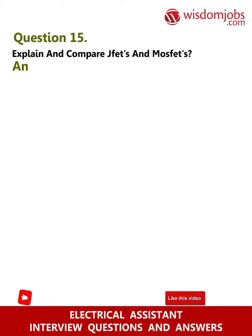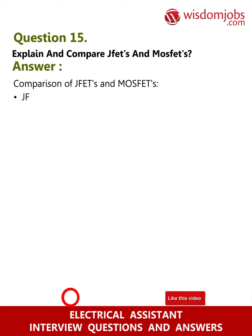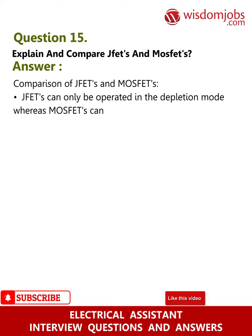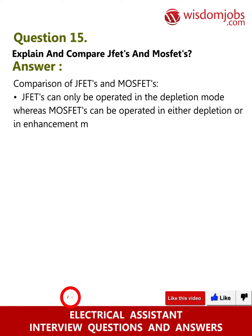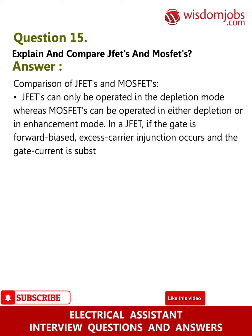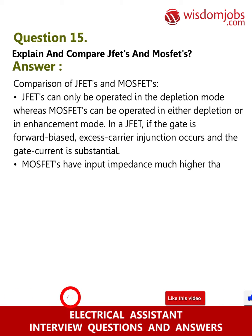Question 15: Explain and compare JFETs and MOSFETs. Answer — Comparison: JFETs can only be operated in the depletion mode, whereas MOSFETs can be operated in either depletion or enhancement mode. In a JFET, if the gate is forward biased, excess carrier injection occurs and the gate current is substantial. MOSFETs have input impedance much higher than that of JFETs.